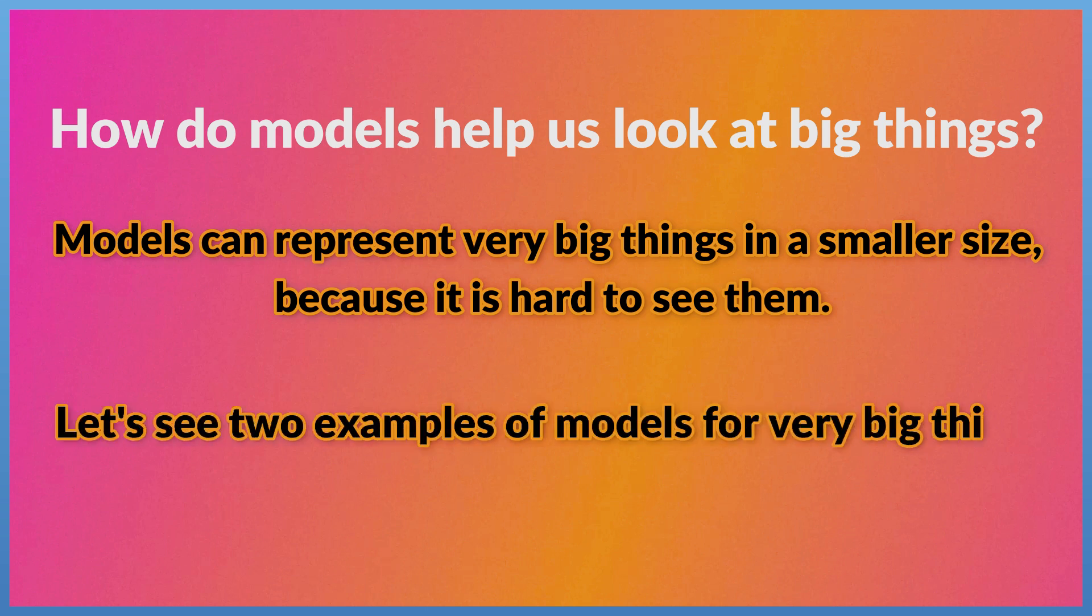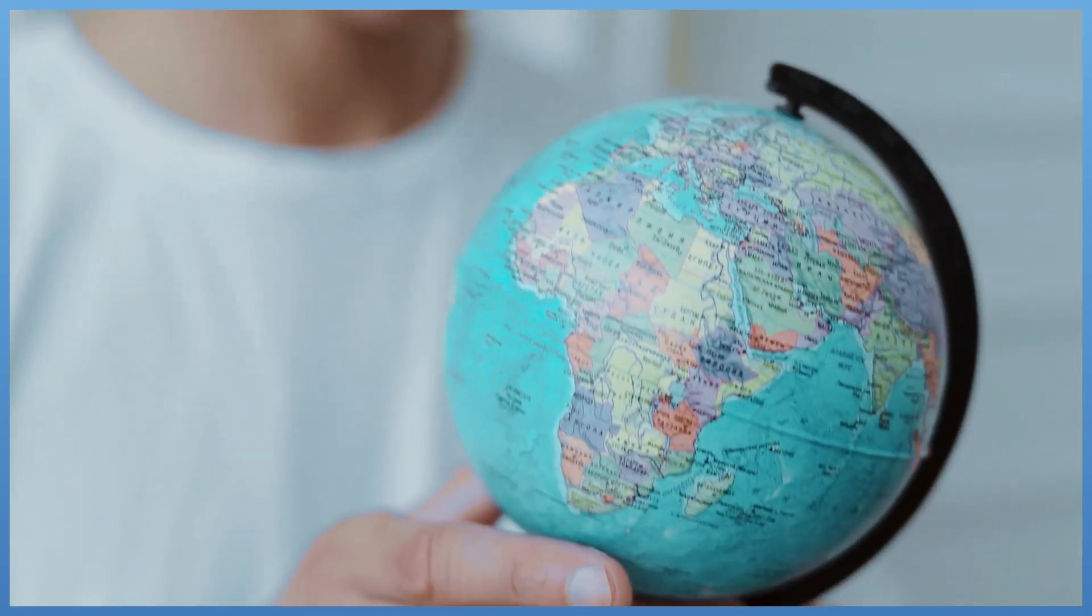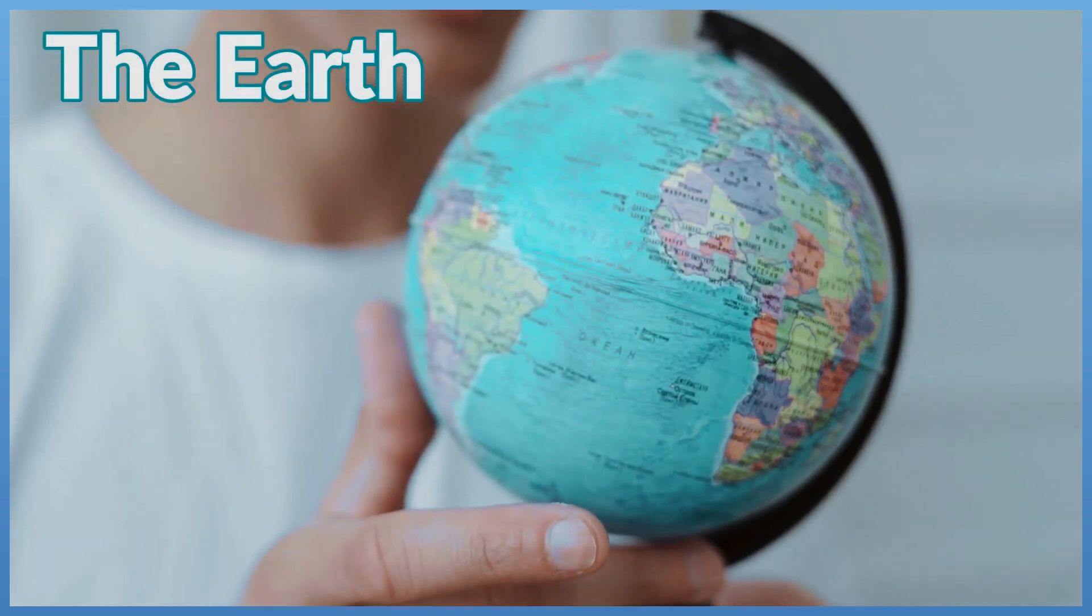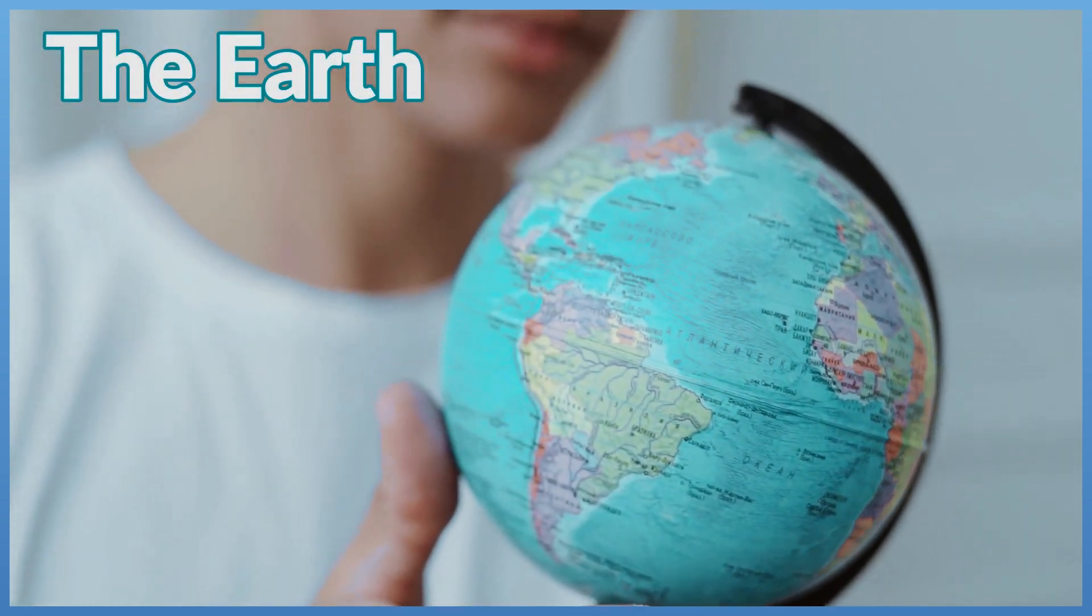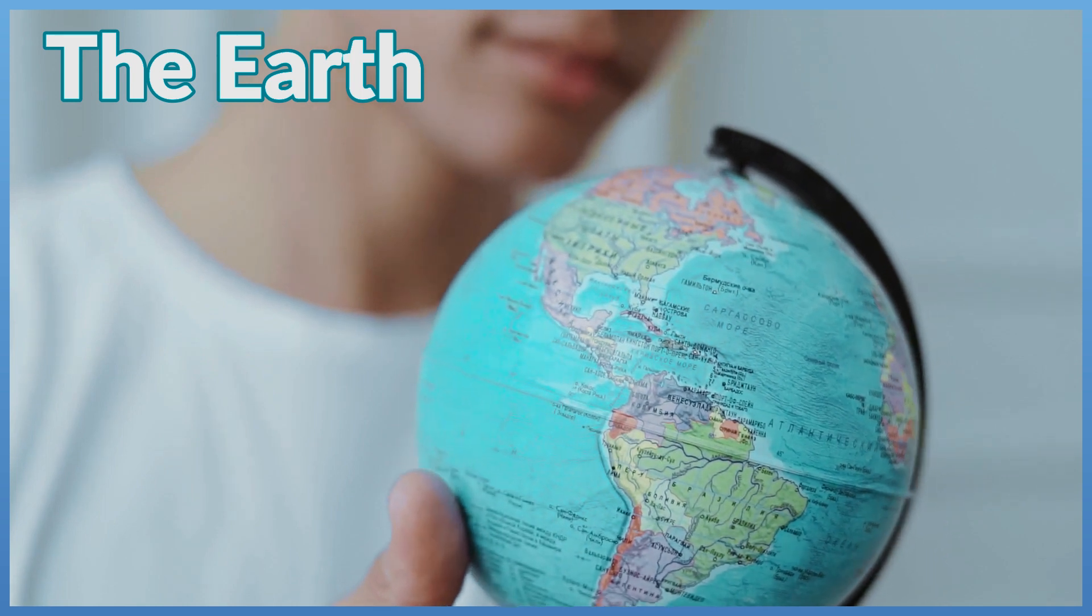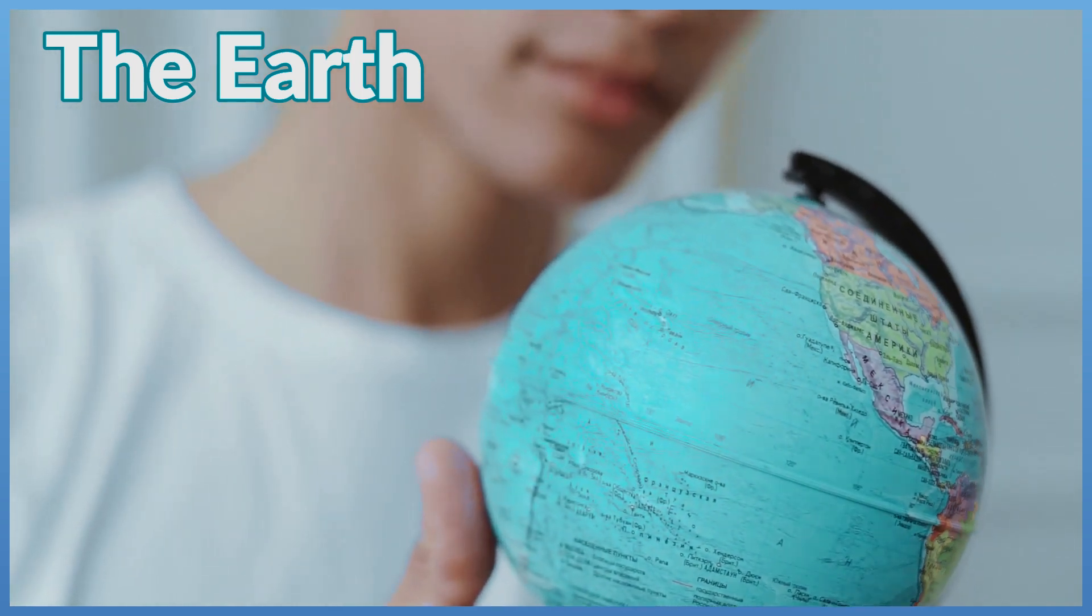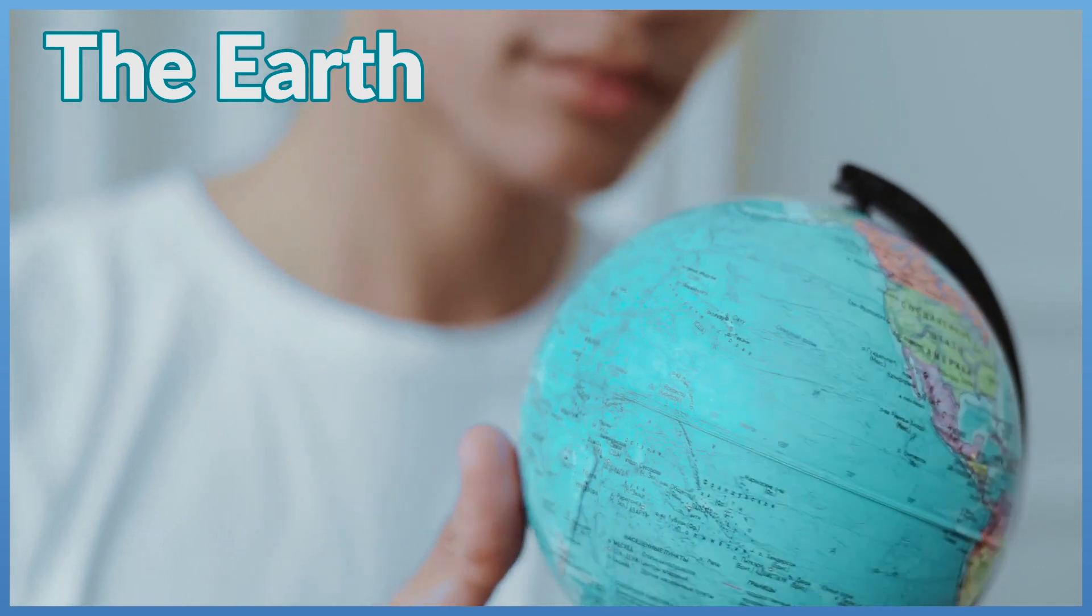Example 1: The Earth. A globe represents a model of the Earth which shows us the shape of the Earth, how much of the Earth is covered with water, and where different countries are located.